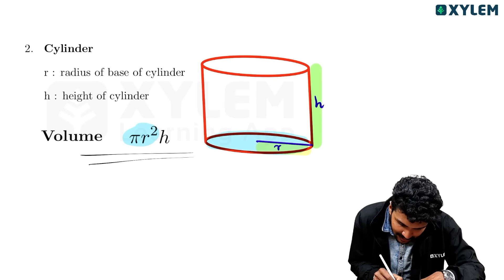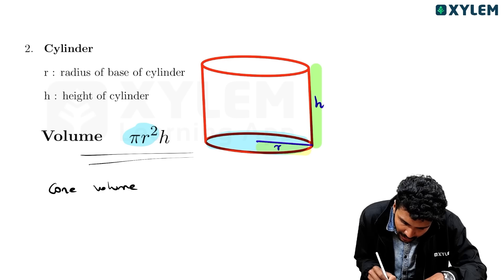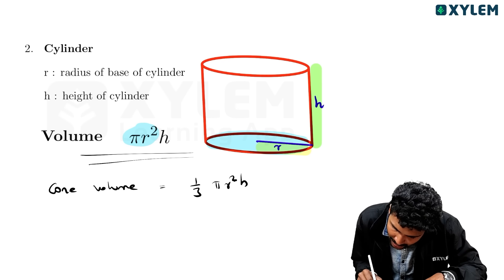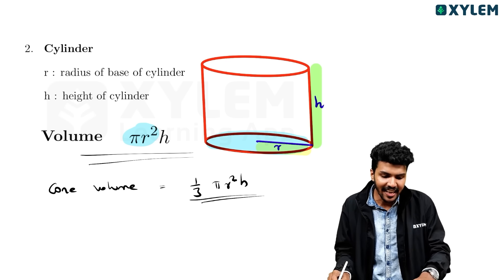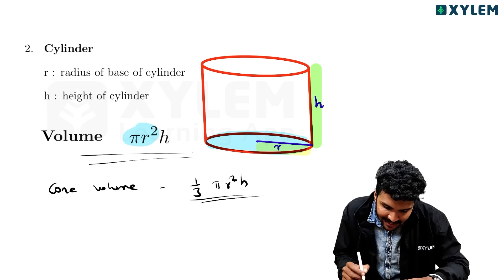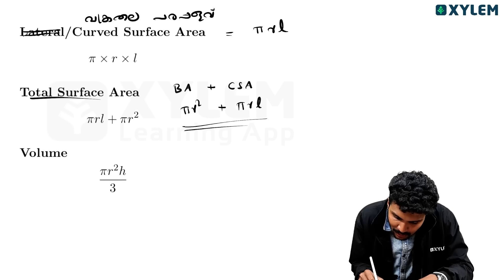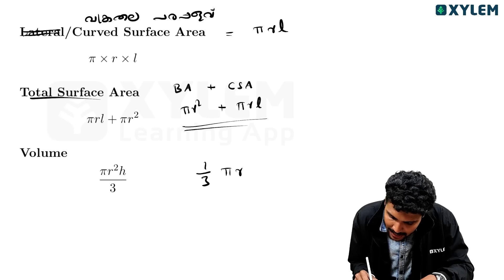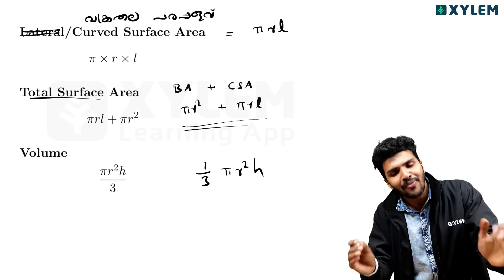The base area is pi r squared. Then the volume - the cone volume is 1 by 3 pi r squared h. 1 by 3 pi r squared h - that is our formula.